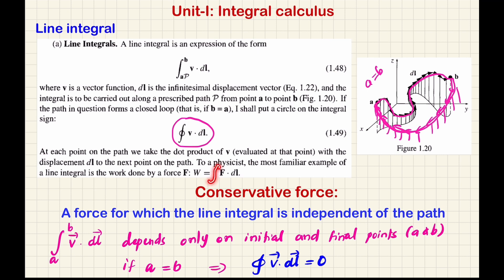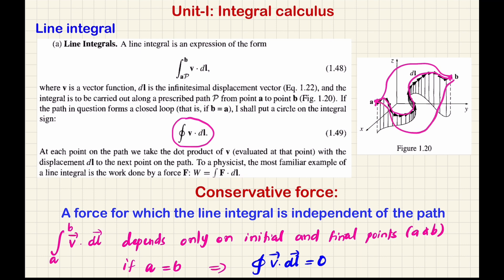The integral is carried over the path. Now, there are certain vector functions which do not depend on the path — in such cases it will depend only on the initial and final points. Suppose we can take this path or this path or this path; we will get the same answer. It depends only on the initial and final points — the path is independent. These are called conservative forces.